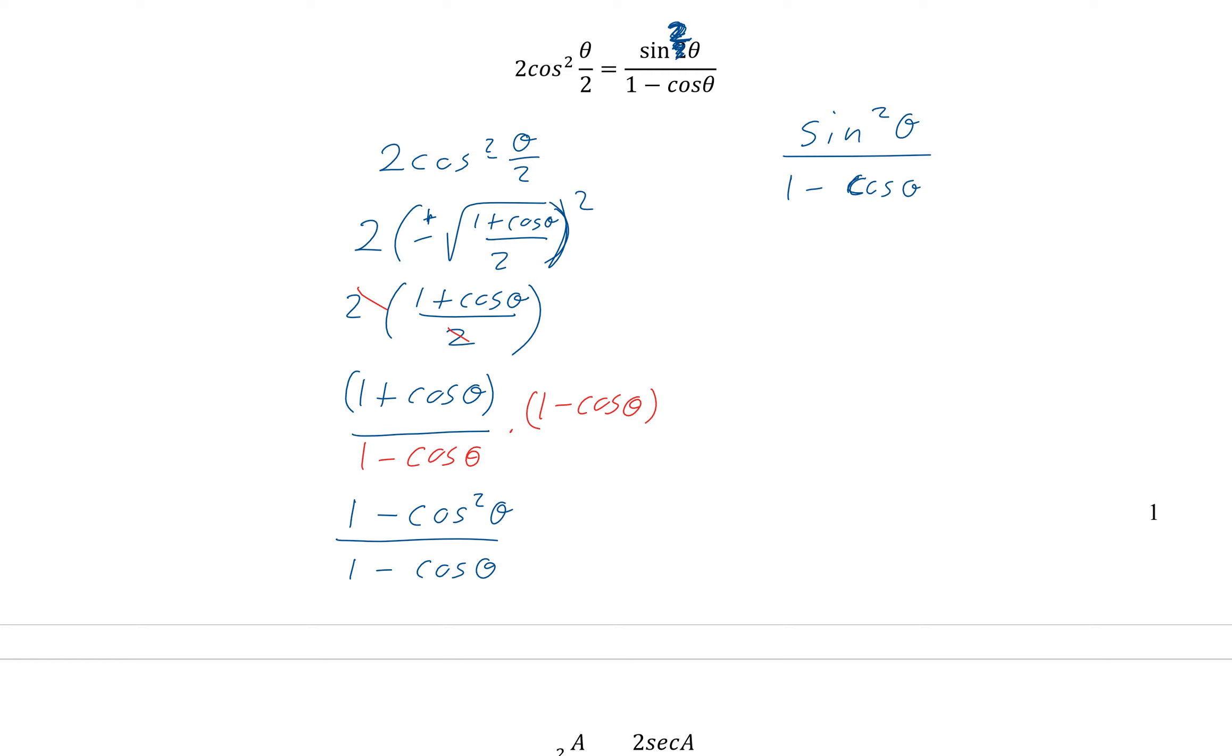Remember the middle 2 cancel and then minus cosine squared theta. And what is 1 minus cosine squared theta? Well, that is sine squared theta. It's our Pythagorean identity. And look at that. There we go. We proved it.